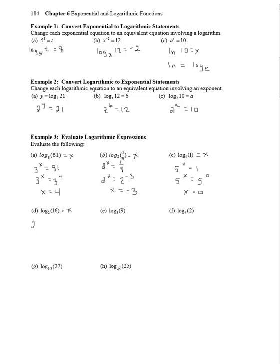Okay, on d, we have 2 to the x equals 16. 16 is 2 to the fourth, so x equals 4. Part e, we have 3 to the x equals 9. 9 is 3 squared, so x equals 2.